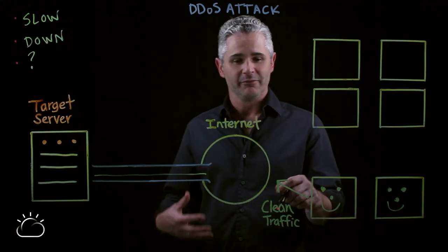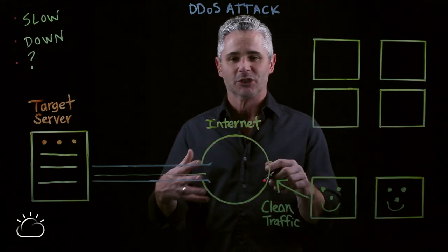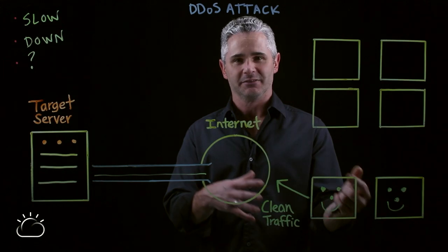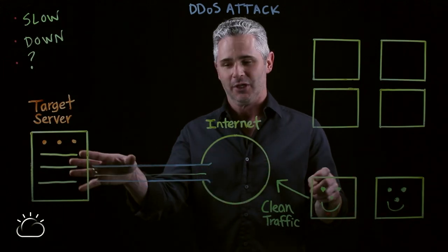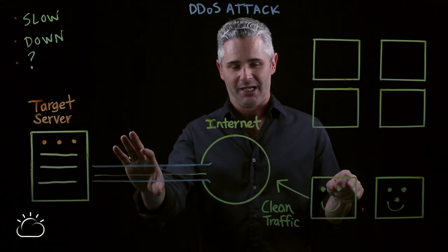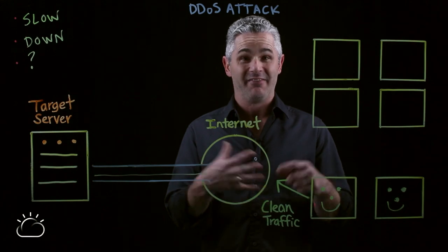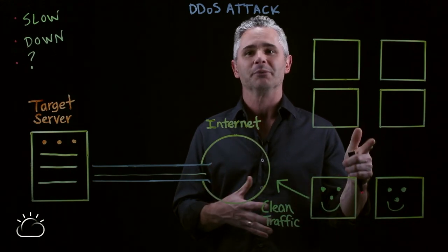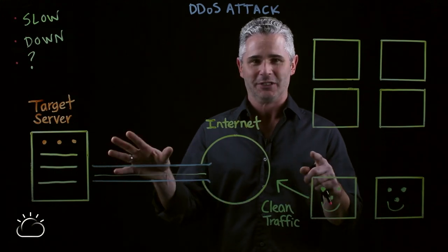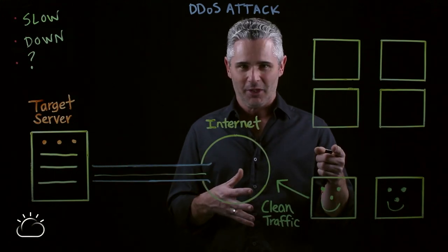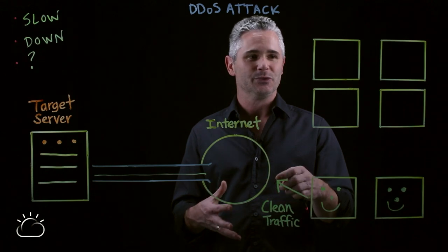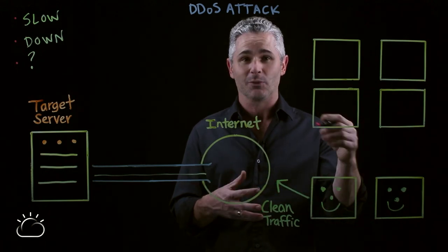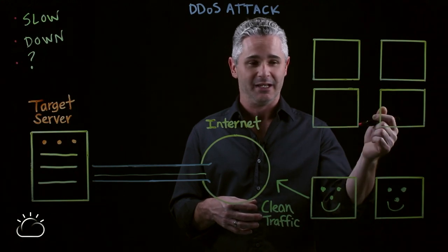So how does an attacker create so much traffic that it causes an inability for this clean traffic to flow from the internet to the target server through its connection? Does the attacker just have that many friends? Usually not — he's not going to pick up the phone and say jump on your computer and let's all attack this target server. He's done his homework and he has access to a collection or network of hacked or compromised computers across the internet.